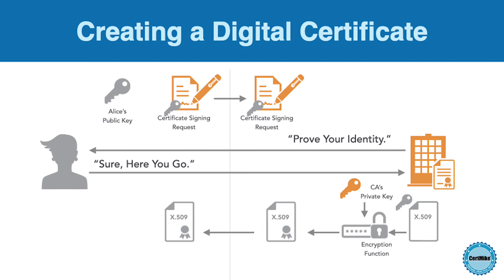The requester can then provide the certificate to anyone who wants to communicate with them. These third parties can verify that the certificate is valid by simply checking that the CA's digital signature on the certificate is valid. If the signature is correct, third parties know that they can use the public key contained in the certificate to communicate with the entity identified on the certificate.